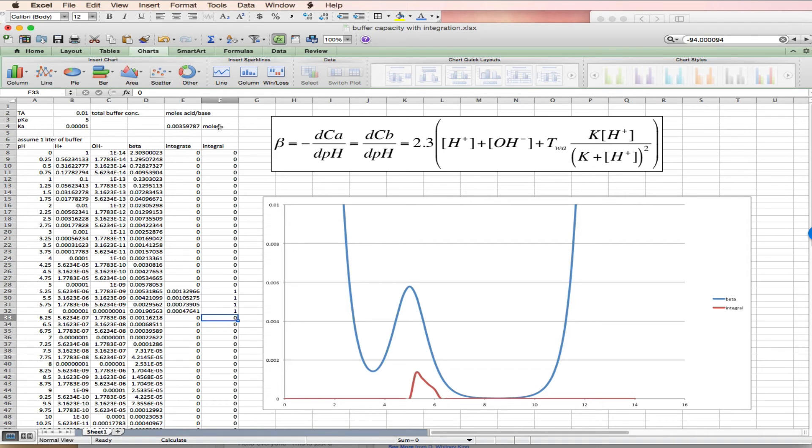And what am I doing here? I'm increasing the weak base concentration, decreasing the weak acid concentration, and essentially we're moving along this curve. So I'm integrating the area under the curve and that's what the red line is showing us.